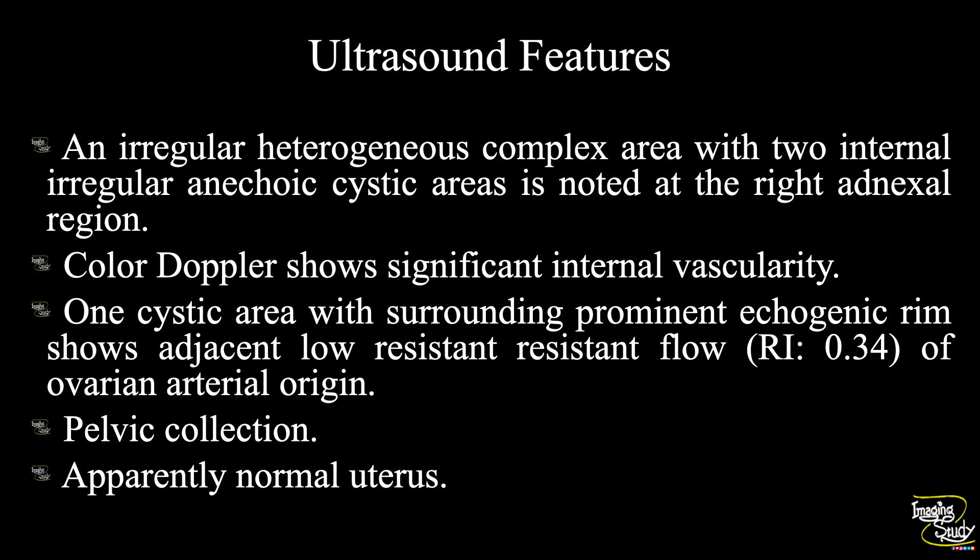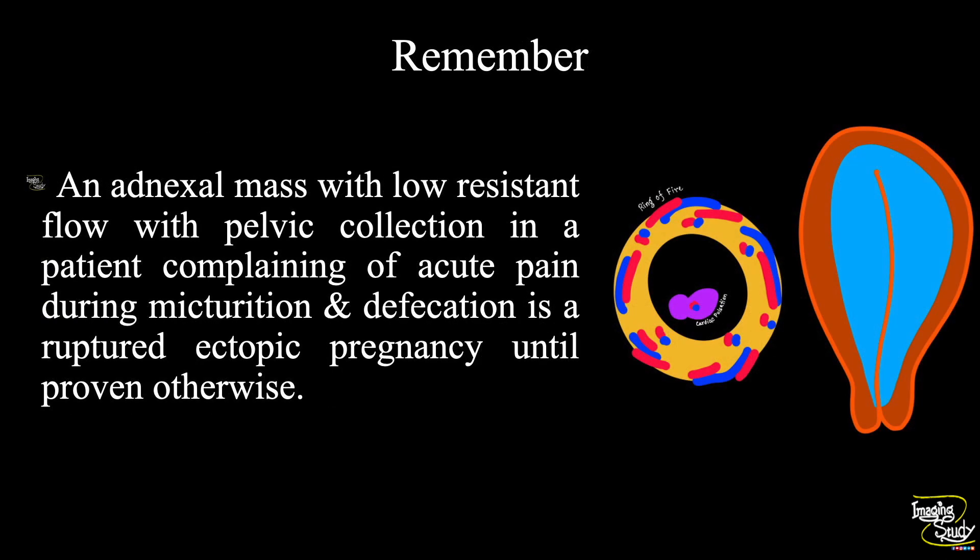In summary: an irregular heterogeneous complex area with two internal irregular anechoic cystic areas is noted at the right adnexal region. Color Doppler shows significant internal vascularity. One cystic area with a surrounding hyperechoic rim shows adjacent low-resistant flow of ovarian arterial origin, with a resistive index of 0.34. Pelvic collection indicates hemorrhagic content. The uterus apparently looks normal.